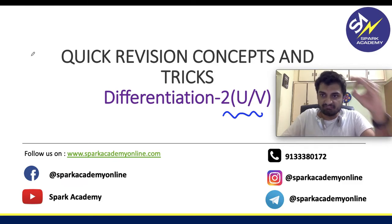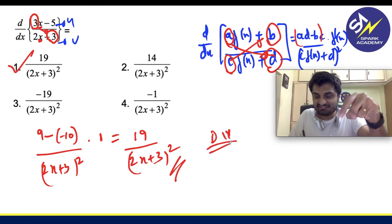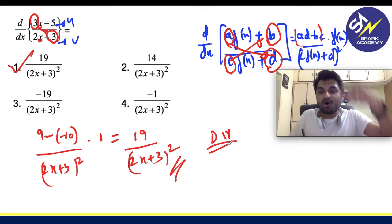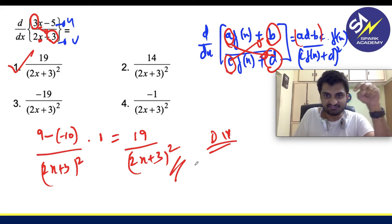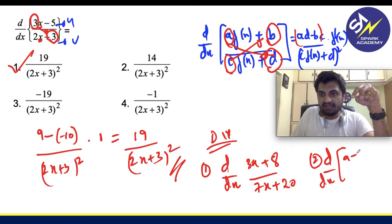Thank you everyone for joining. I will give you a couple of DIY questions and I want you to tell me the solutions either in the comment section or you can join our telegram group. The first question is d by dx of (3x + 8) by (7x + 20). The second question is d by dx of [a + cos(bx)] by [a - cos(x)·b].